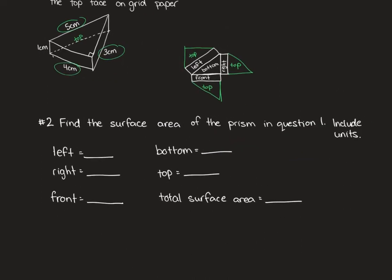Question two will ask you to find the surface area of the prism in question one and include the unit. So once again, there were two examples in question one. There will be two examples in question two of part A and B where you do this for each of the prisms.